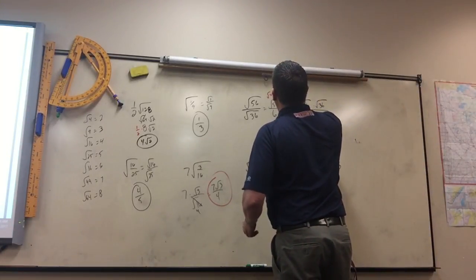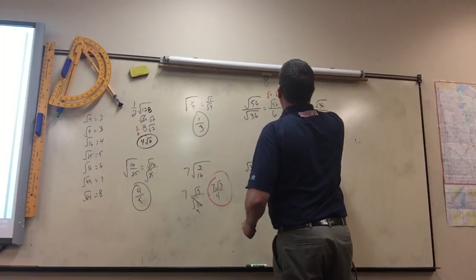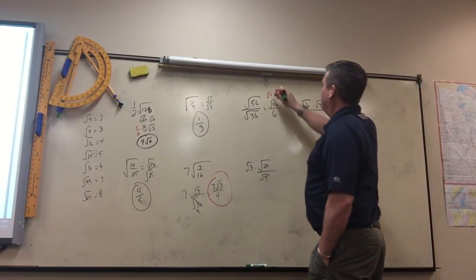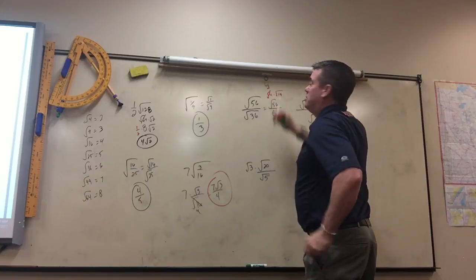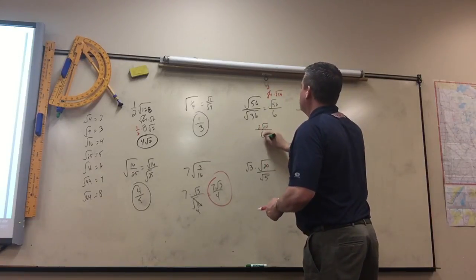Square root of 4 times, that should be 14. So the square root of 4 is 2.